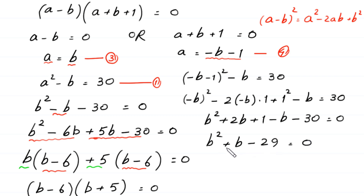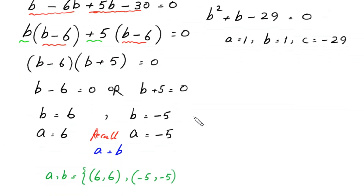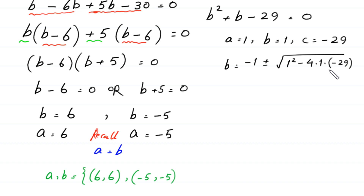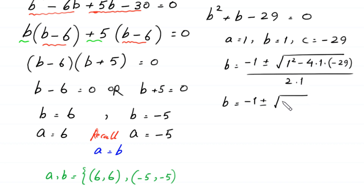This quadratic is not factorable, so we use the quadratic formula. Here a equals 1, b equals 1, and c equals negative 29. So b equals negative 1 plus or minus square root of (1 squared minus 4 times 1 times negative 29) all divided by 2 times 1, which simplifies to negative 1 plus or minus square root of (1 plus 116) over 2.